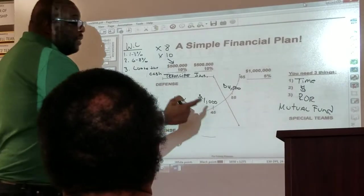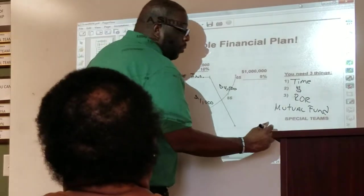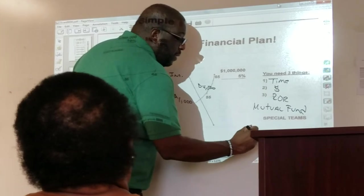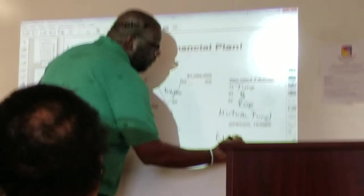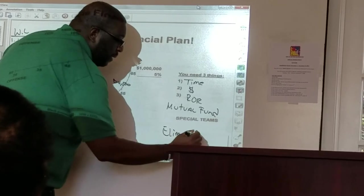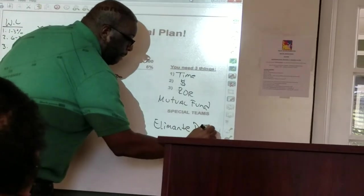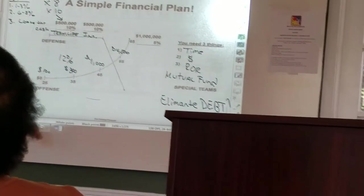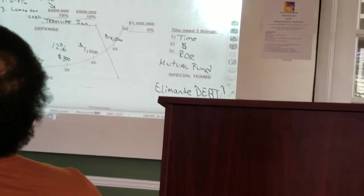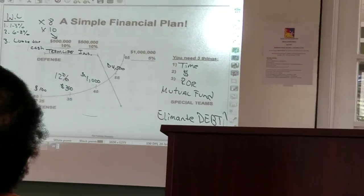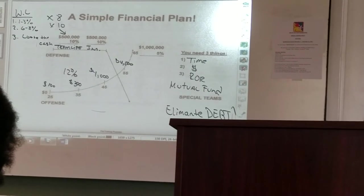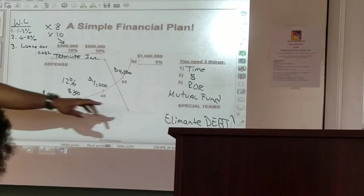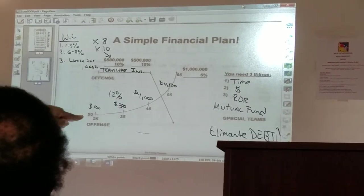This other minor adjustment is I want you to write down here with special teams these two words: Eliminating debt. Special teams is eliminating what? Debt. Eliminating debt. Why do we eliminate debt? We eliminate debt so you can do what? Be financially free.